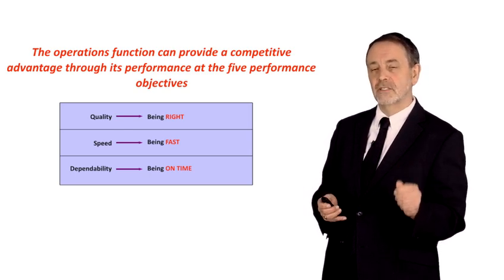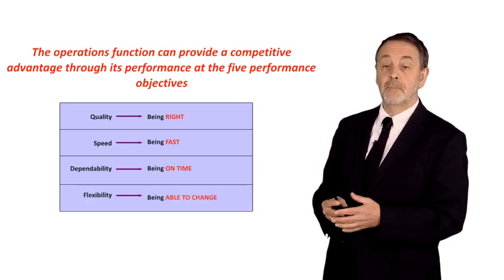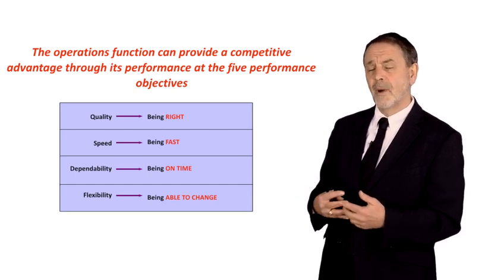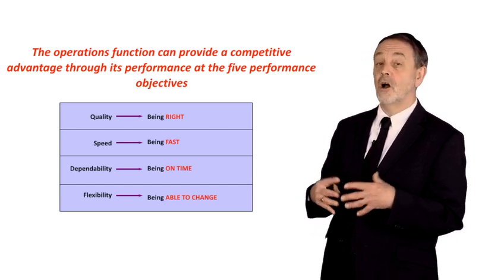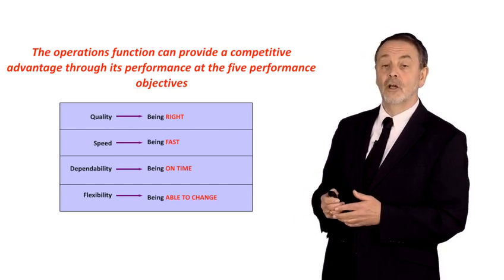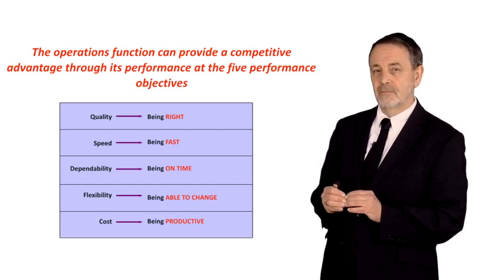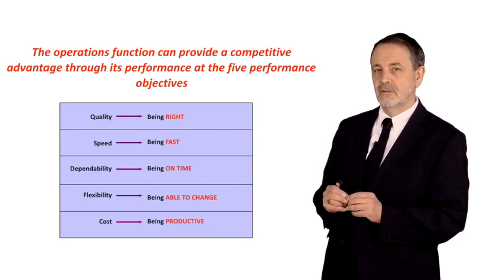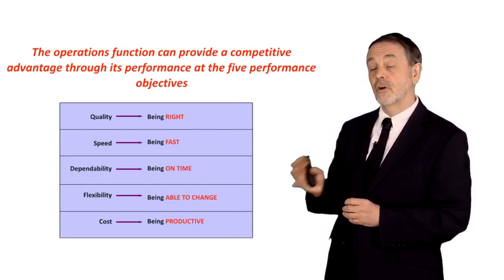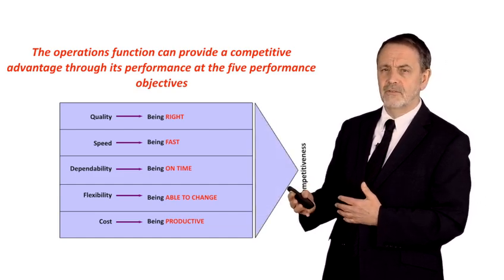People expect the service to be there when they want it. Flexibility — being able to change the products, the product mix, the speed, the markets. Flexibility is a whole bag of capabilities. And then finally, cost. Cost is never unimportant, but it's not always the reason we get the business. But if we do compete on cost, it means we've got to be productive. And this is really how we define our competitiveness.